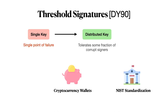Threshold signatures allow multiple parties to sign a message where some threshold of them is required to sign. They're important for distributing trust because if we have a single key, this represents a single point of failure. However, if we distribute the key amongst multiple parties, then we can tolerate some fraction of corrupt signers.